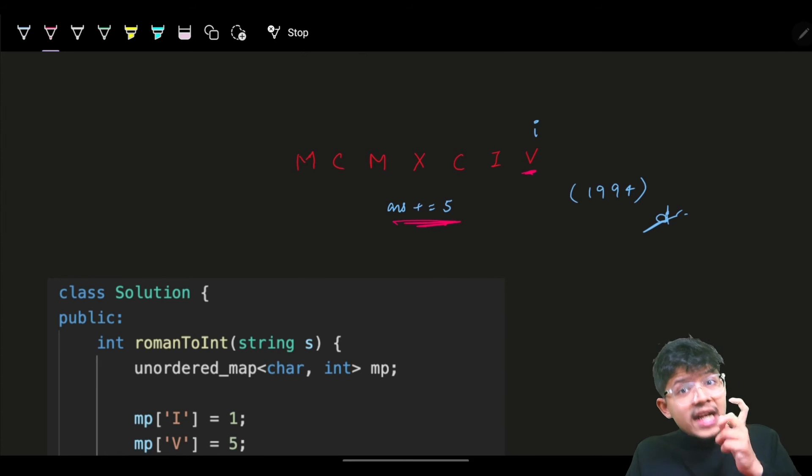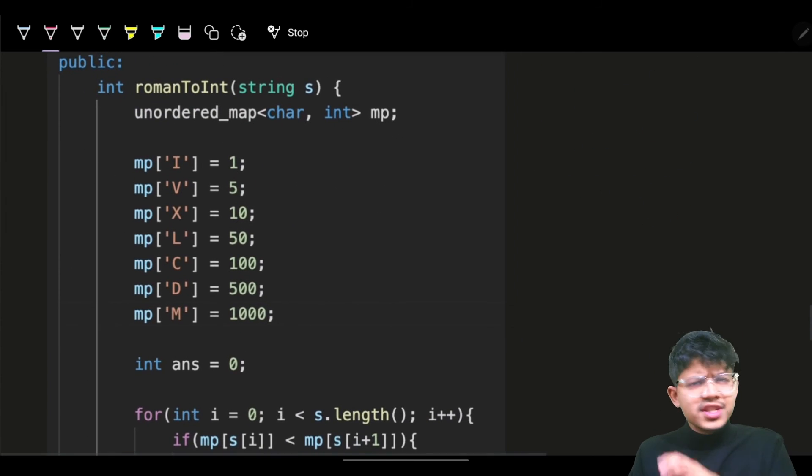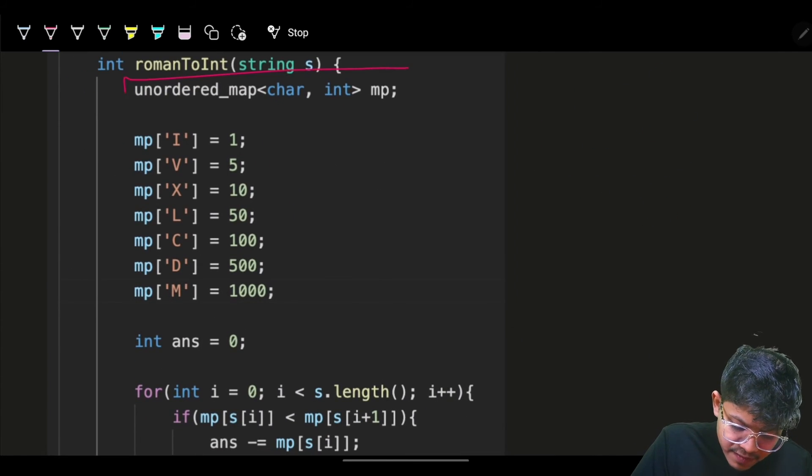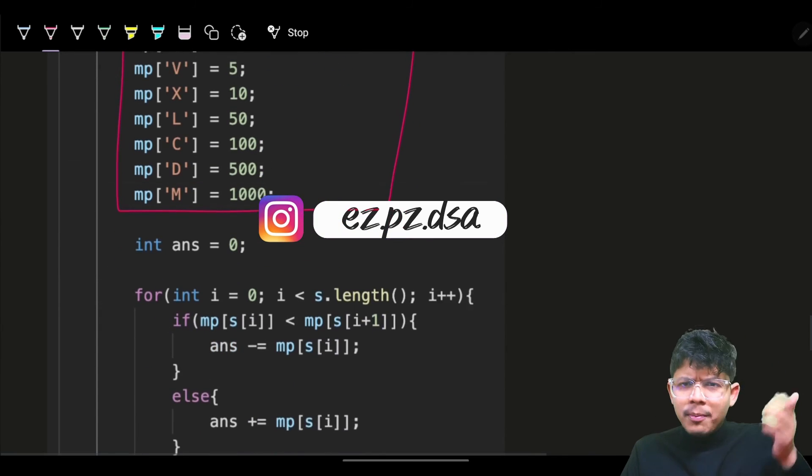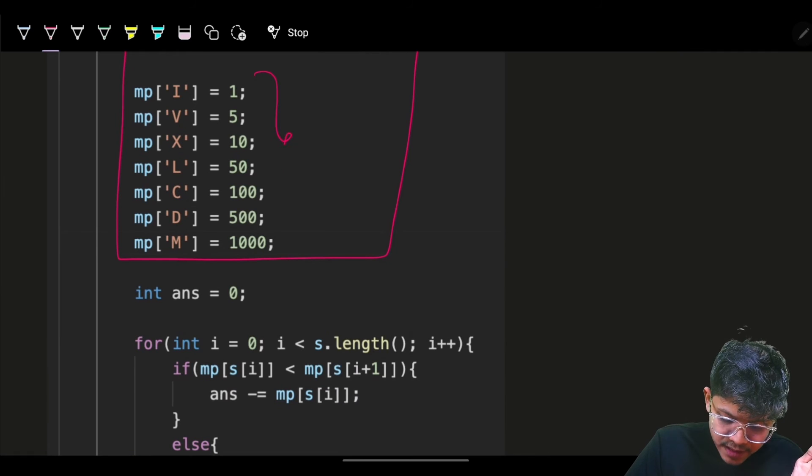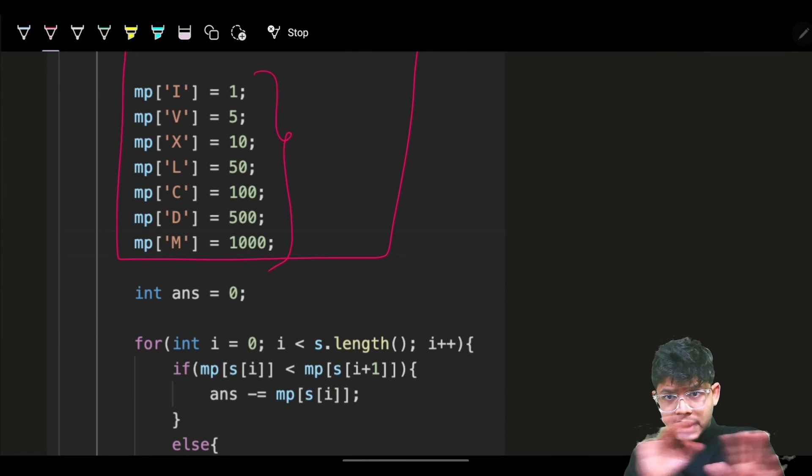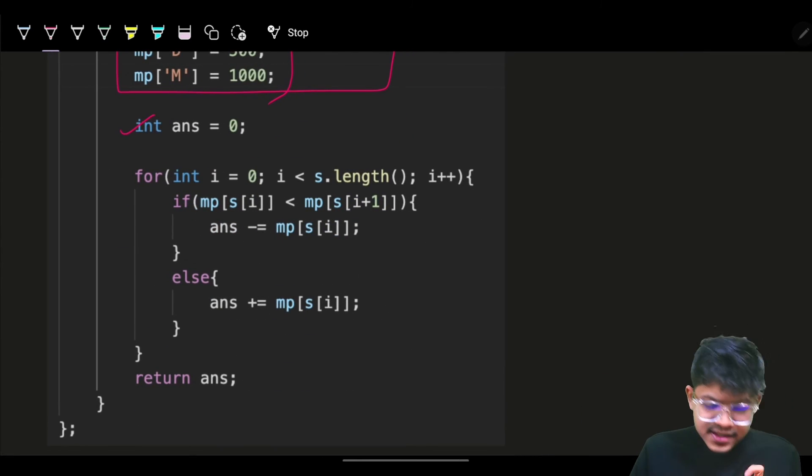The question says we'll do exactly the same thing. First we'll make a map - the map is as simple as what the problem itself is saying. Next, I'll initialize my answer and go through all my indices.